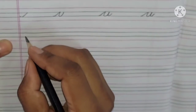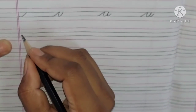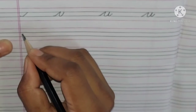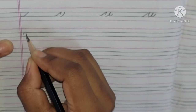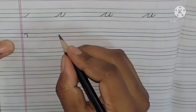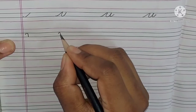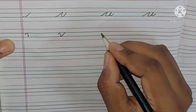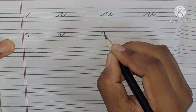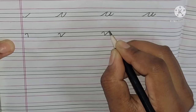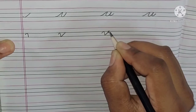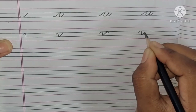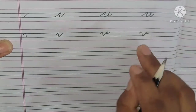After U, what comes? V. For V, we start a little below the second line. The second line is here; start a little below the second line like this. Then draw a slanting line from the third line to the second line, like this. Once again — this is your small letter V.